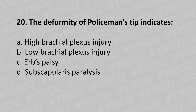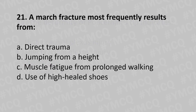Moving to our 20th question: the deformity of policeman's tip indicates — option A high brachial plexus injury, option B low brachial plexus injury, option C Erb's palsy, option D subscapularis paralysis. And the answer is option C Erb's palsy.